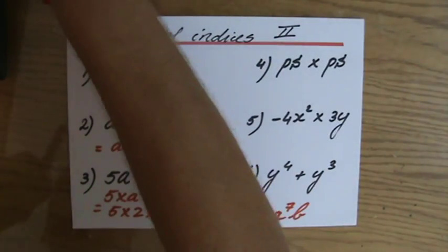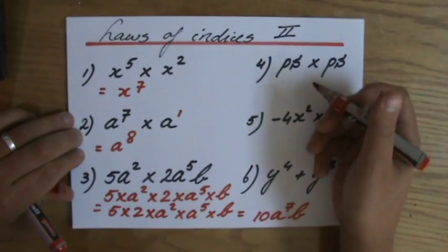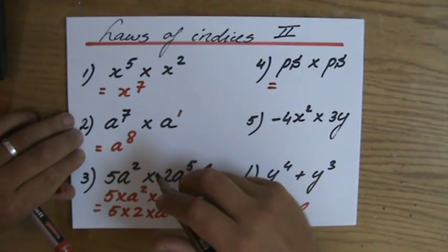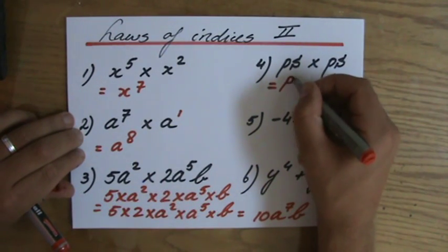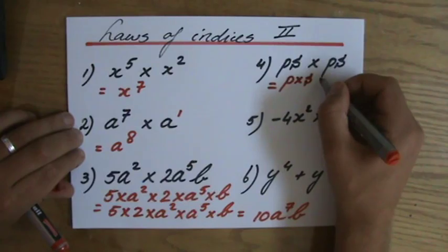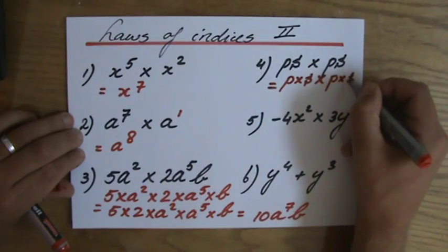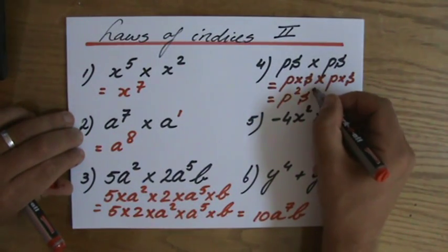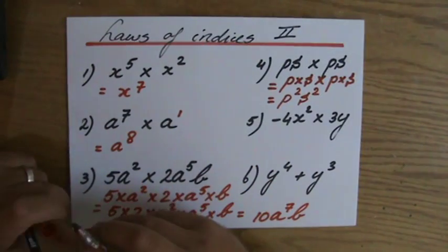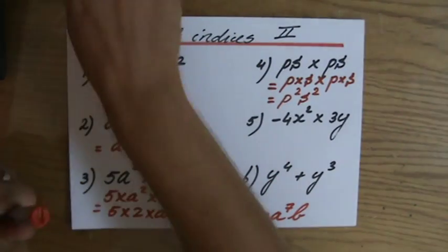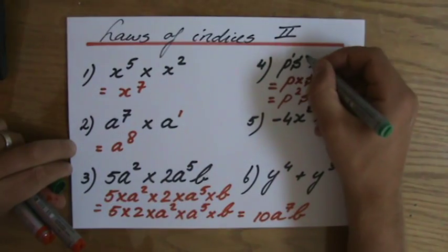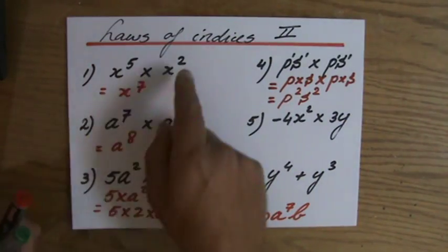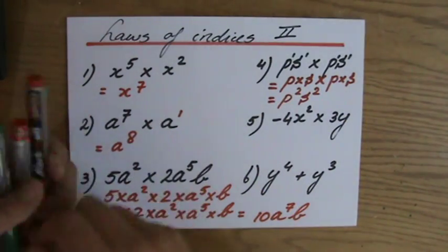ps times ps — what are the indices here? What is the index of p? ps means p times s, times p times s. The answer is p to the power 2, s to the power 2. Because again, the indices here are all 1 — we never write 'to the power 1', because everything is to the power 1 unless we write a 2 or a 5.